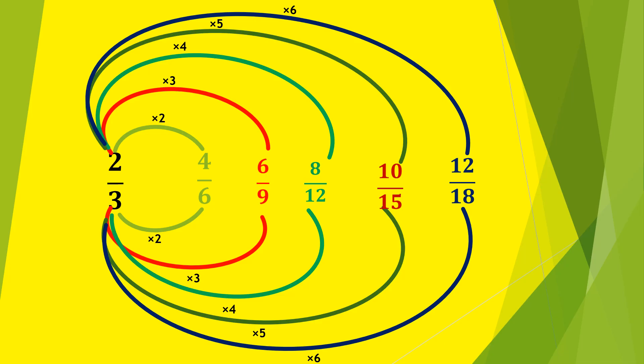Look at here. This is 2 by 3. Now, we are multiplying with 2. So, 2, 2 is 4 and 3, 2 is 6. Again we are multiplying with 3. 2, 3 is 6. 3, 3 is 9. Like that,